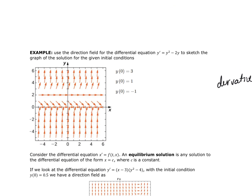In this next example, we use a given directional field for y prime equals y squared minus 2y to sketch solution graphs for given initial conditions. The first initial condition is x equals 0, y equals 3. I go to the ordered pair (0, 3) on the field—this is the starting point, and I trace the solution curve from there.